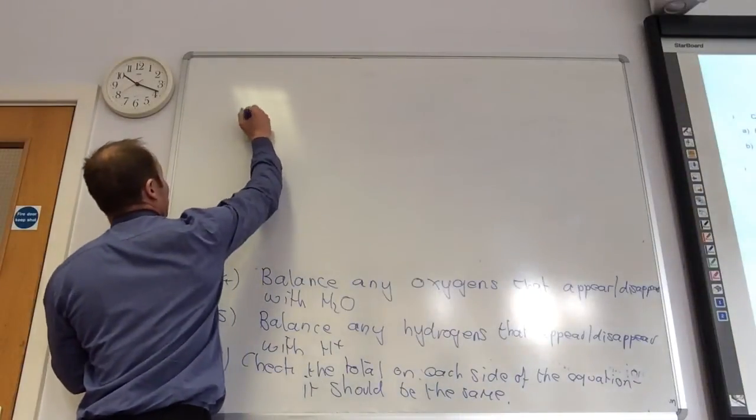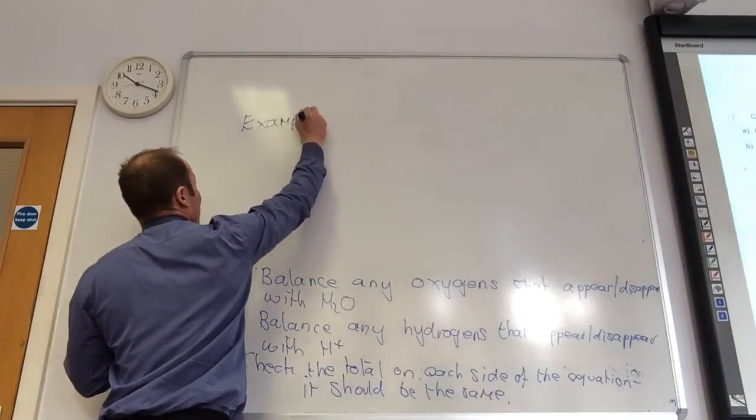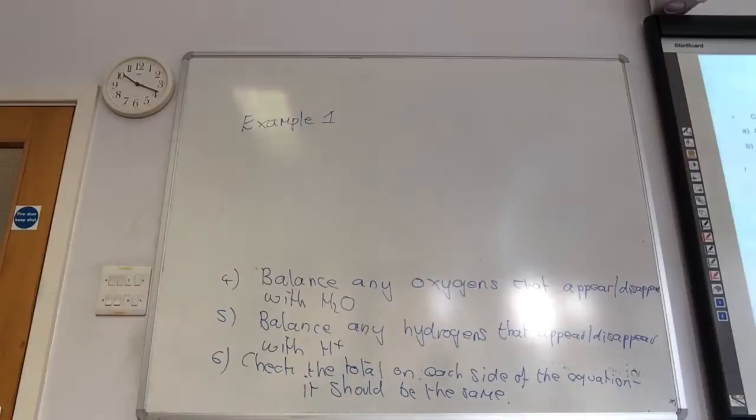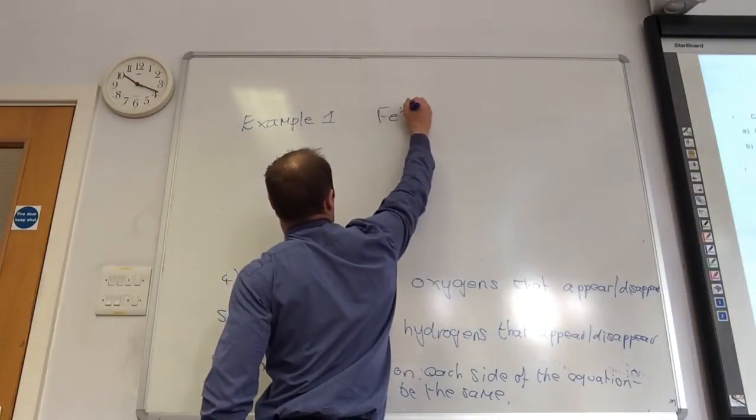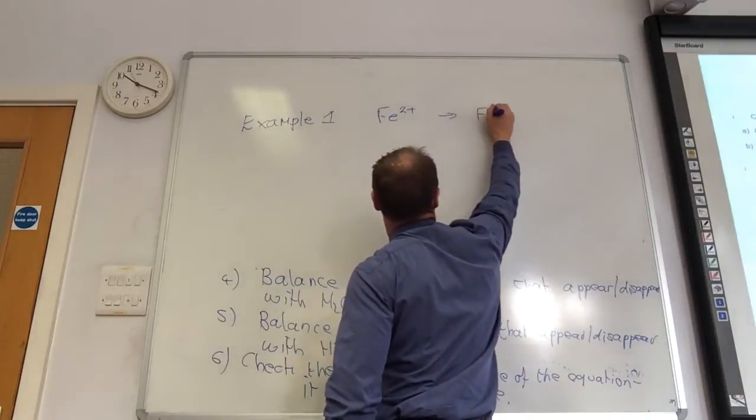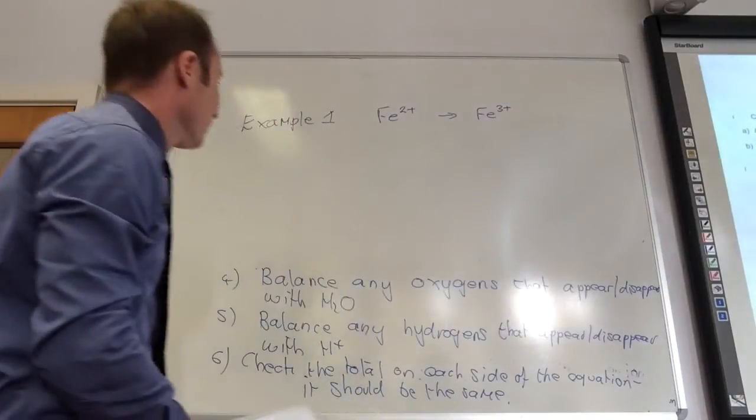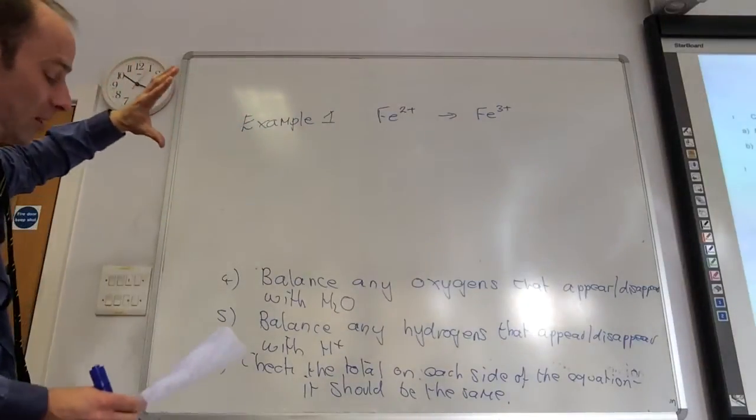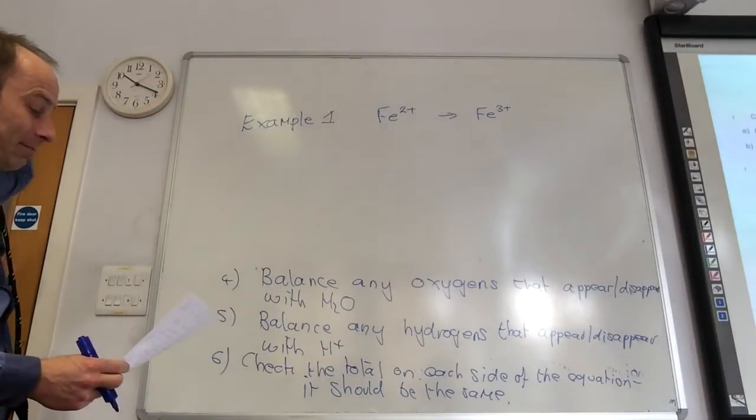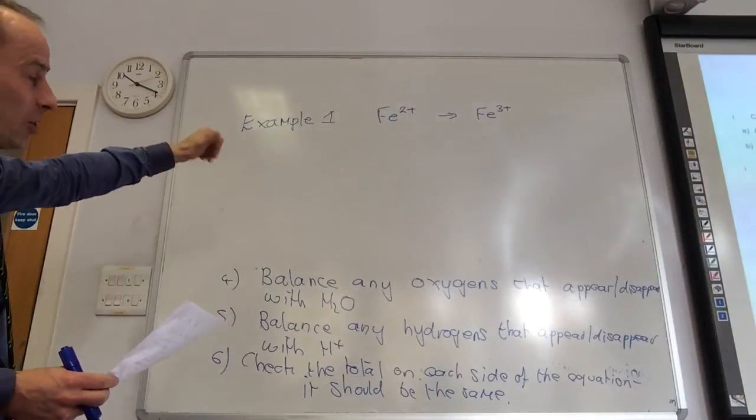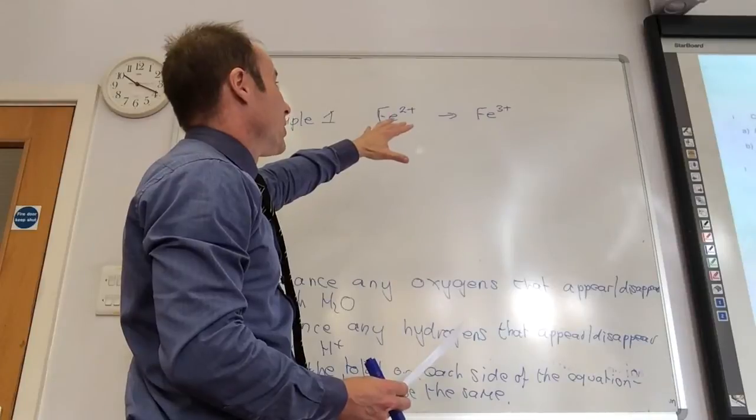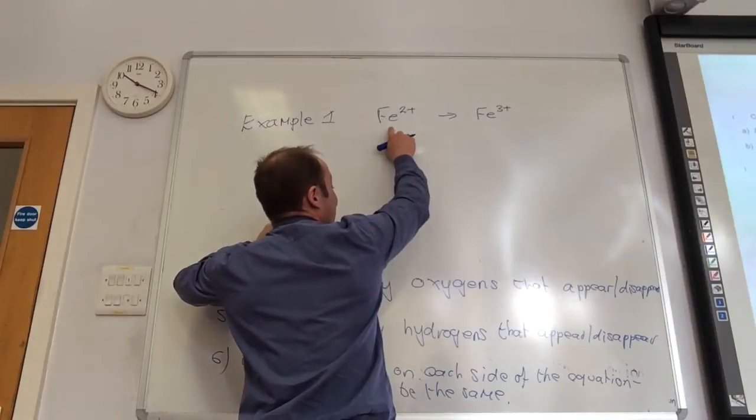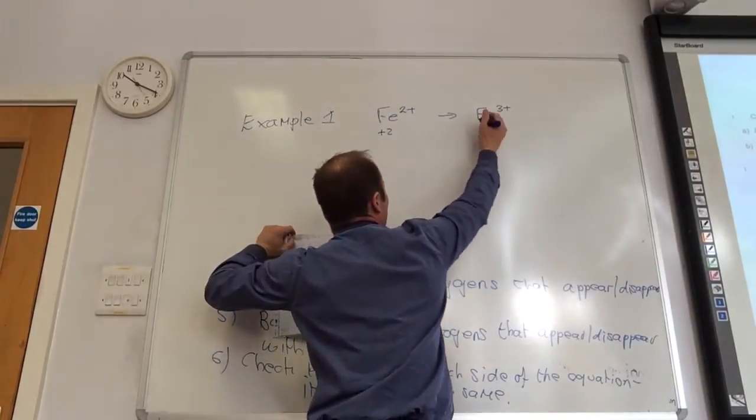Example number one is going to be this one. We are going to look at Fe2+ becoming Fe3+. That's the equation they want me to now turn into a half equation. So, the first thing I have to look at, oxidation numbers. There's only one thing in there, so it's obviously going to be iron. Just out of interest, what is the oxidation number of iron here? 2+. Yeah. And here? 3+.